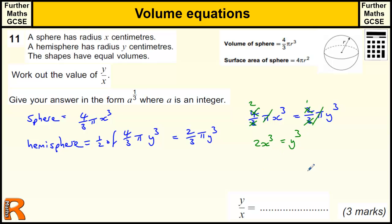So if I want y divided by x, let's do y cubed divided by x cubed. And then to find what y over x is, I need to take the cube root of both sides.